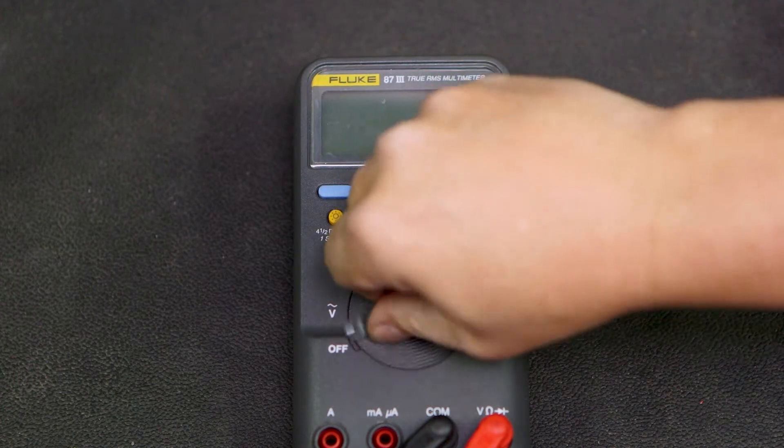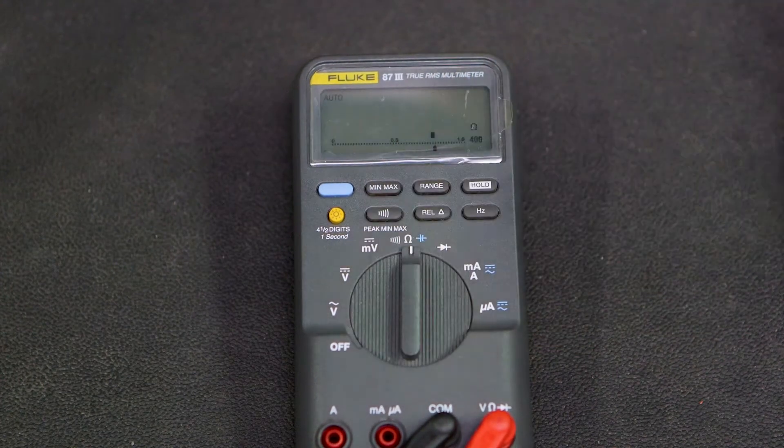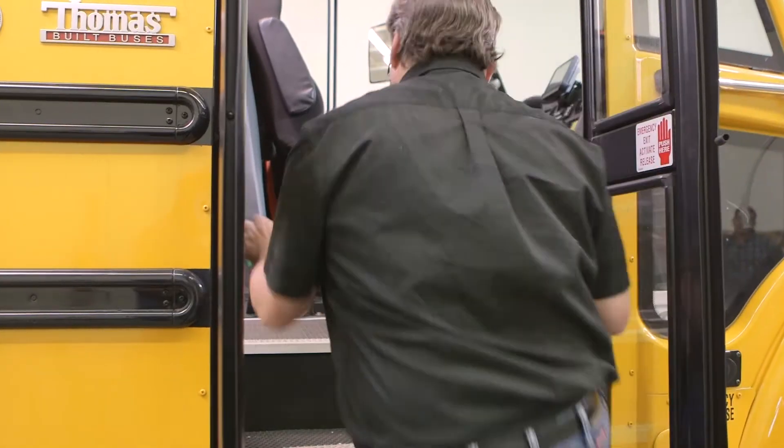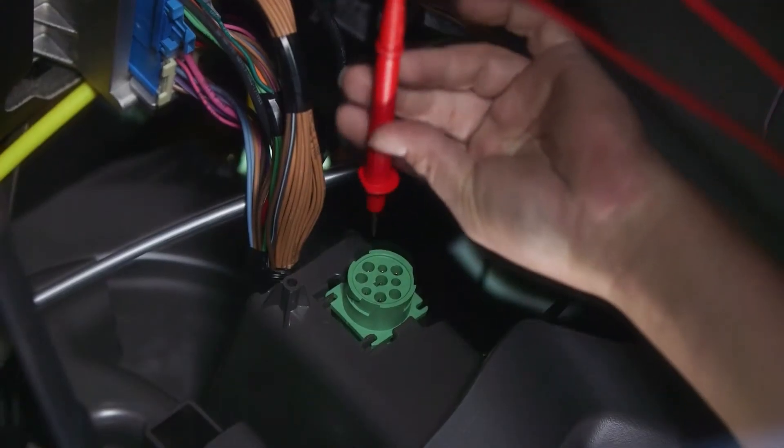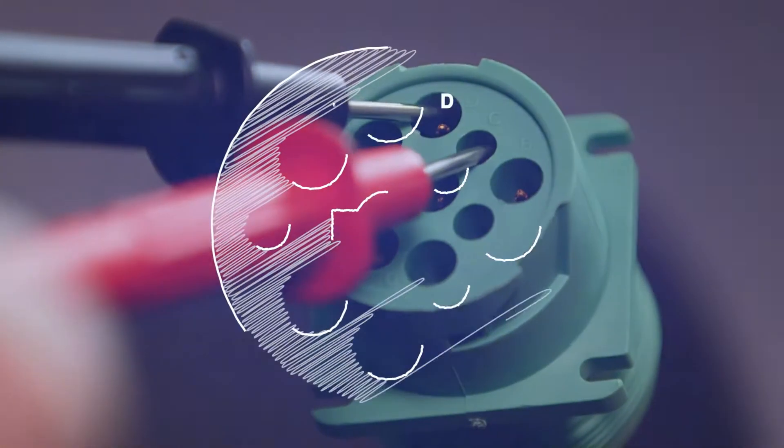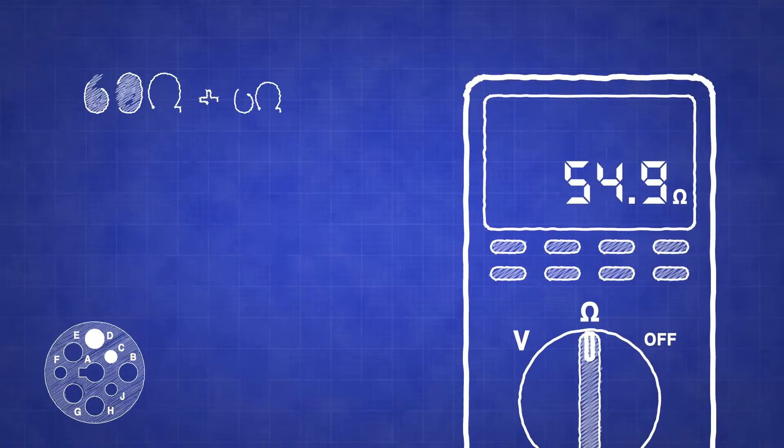Switch your multimeter to the ohm section. Locate the diagnostic connector located under the dash and insert the multimeter probes into pins C and D. The reading should be within 6 ohms of 60 ohms.